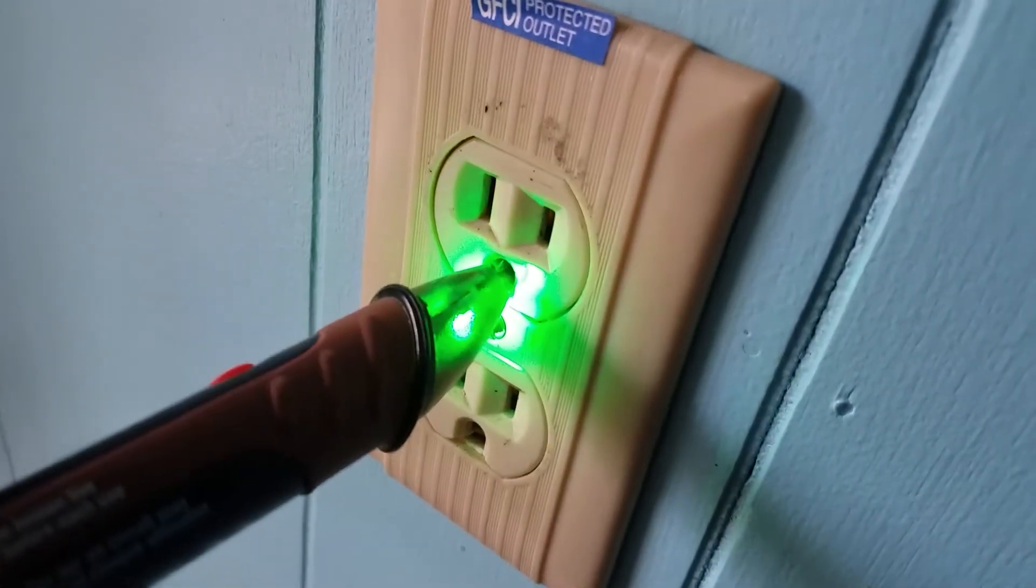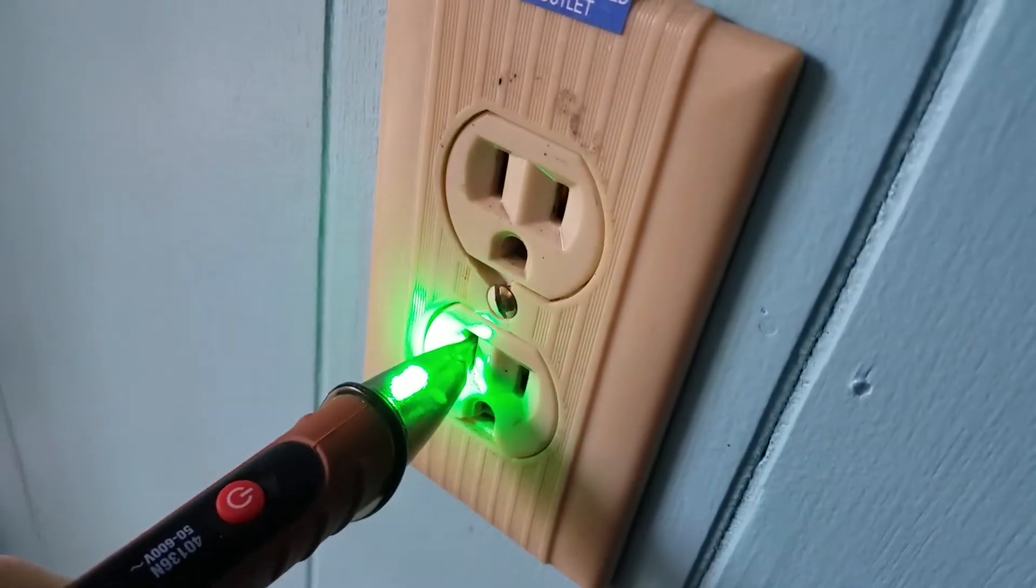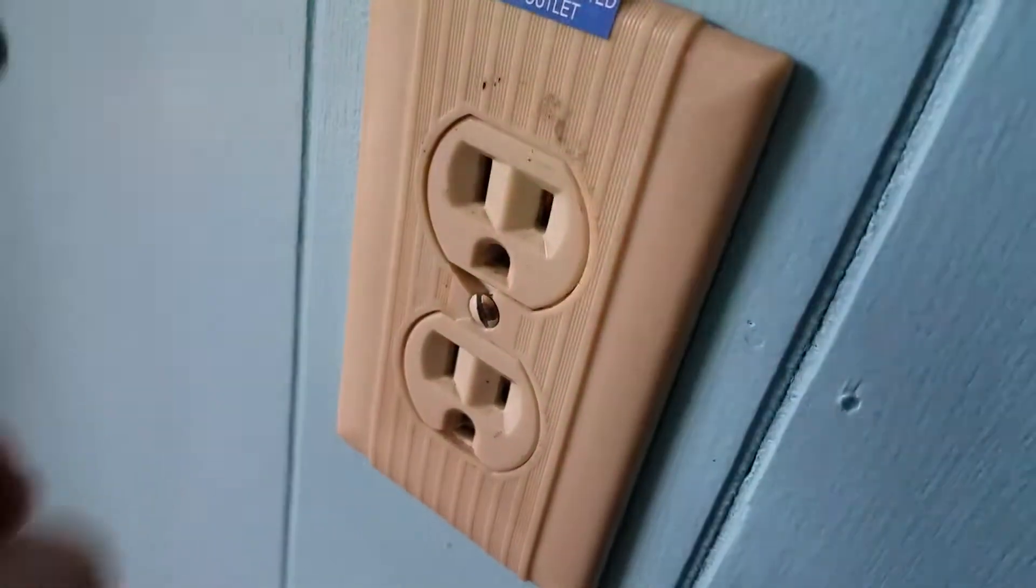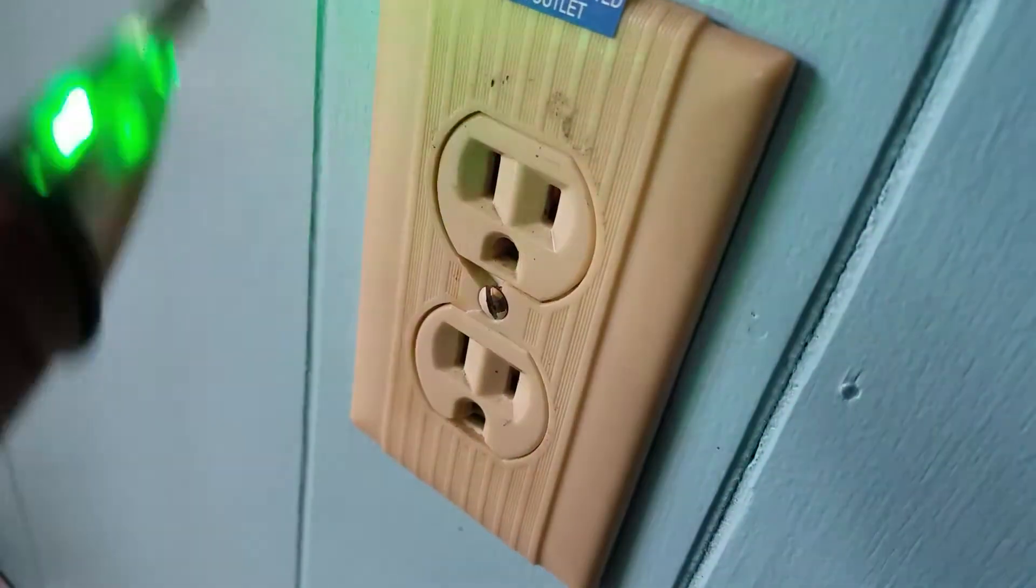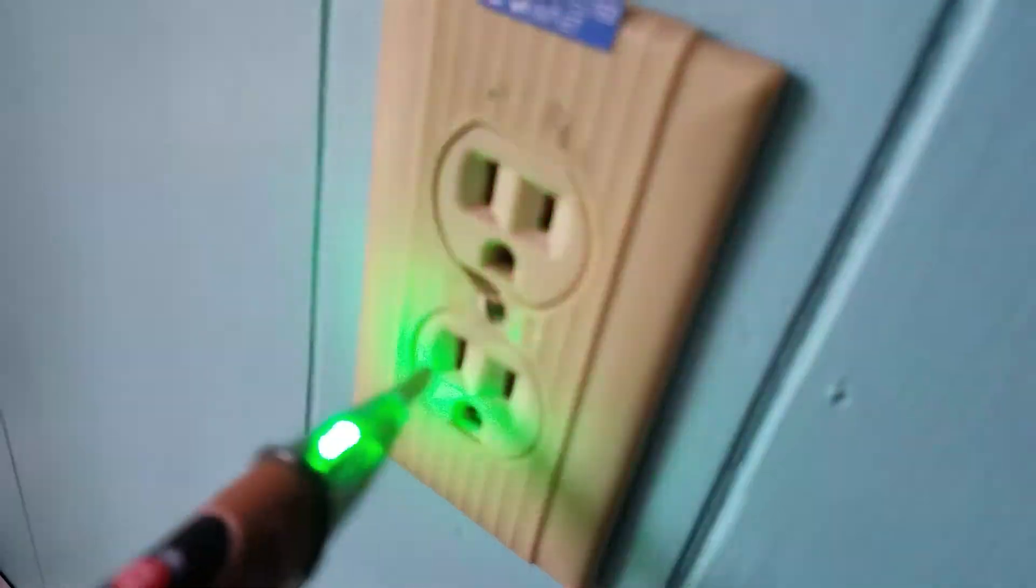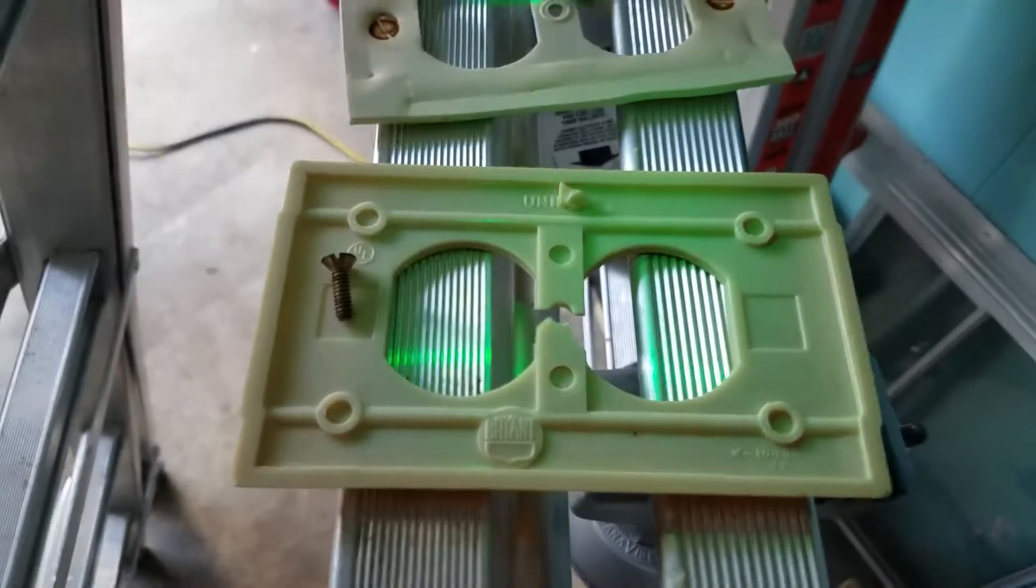Finally we use our non-contact probe and there is no indication of any power in this circuit, so we're good to at least take the plate off. Then we'll probe once more once we're inside to make sure there are no wires that are hot traveling through.